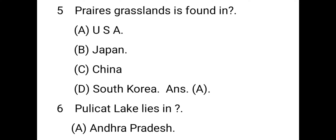Prairies grassland is found in which country? The right answer is USA. Temperate grasslands include the Pampas of Argentina and Brazil, and the Steppe of Ukraine, Russia, and Kazakhstan. Prairies are also found in the USA.